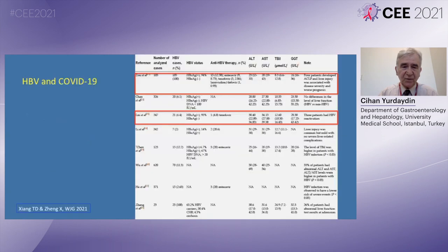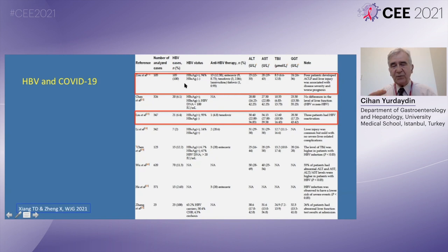Finally, chronic viral hepatitis. This is a review published recently in the World Journal of Gastroenterology. Most of these studies are based on a small number of patients, but I want to mention two. The study by Zhou et al. encompassed 105 patients with chronic hepatitis B and COVID-19, and only 12% received antiviral treatment for hepatitis B. There were four cases of acute-on-chronic liver failure and all of them died — none had received antiviral treatment for hepatitis B.